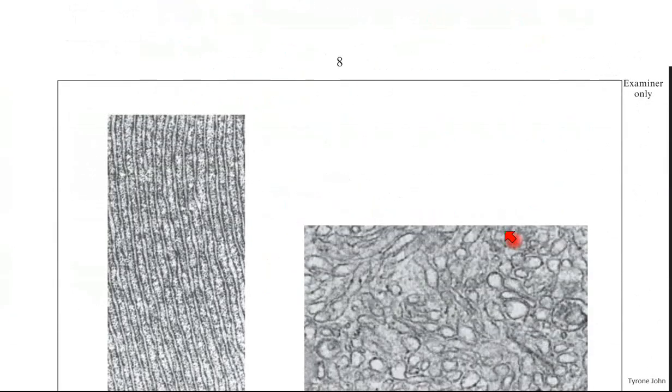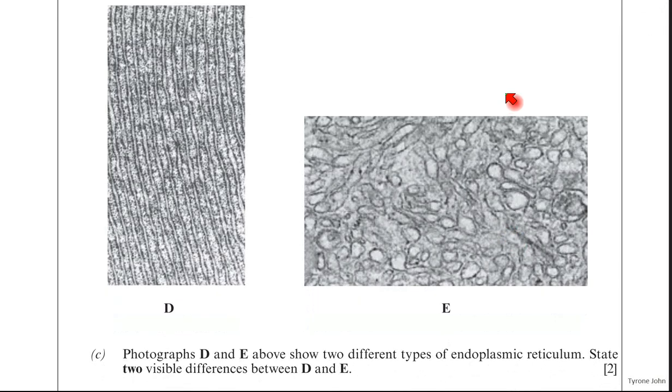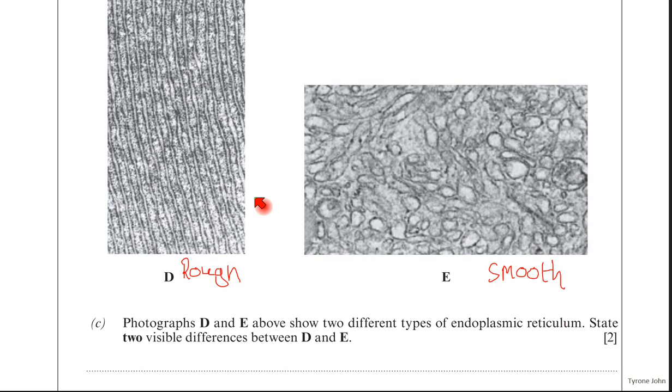Let's move on to part C. This is to do with the endoplasmic reticulum. D is the rough endoplasmic reticulum, so that's rough. One of the reasons why is that you've got these ribosomes on the surface, it's got this sort of rough appearance. E, that would be the smooth ER, where the structure is slightly different. What they're asking for now is to state two visible differences between D and E.